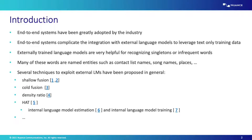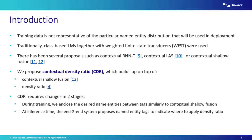For the case of named entity recognition, we know that the training data is not representative of the particular named entity distribution we will see in deployment. Class-based language models together with some kind of weighted finite-state transducer have been used to bias and contextualize language models. There have been several proposals for the specific case of end-to-end systems, such as contextual language model structure, contextual shallow fusion, or even contextual solid fusion.